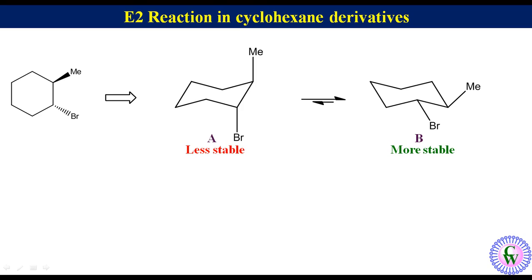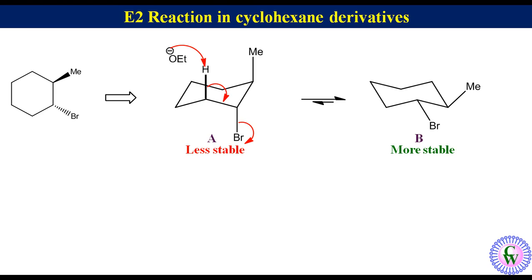For elimination to occur, the leaving group must be axial and there must be a beta hydrogen. Conformation B has the leaving group at the equatorial position, so it will not take part in elimination. In conformation A, bromine is axial so it can take part in elimination. This beta carbon has an axial hydrogen, so in the presence of a base like ethoxide ion, elimination will occur to produce 3-methylcyclohexene.